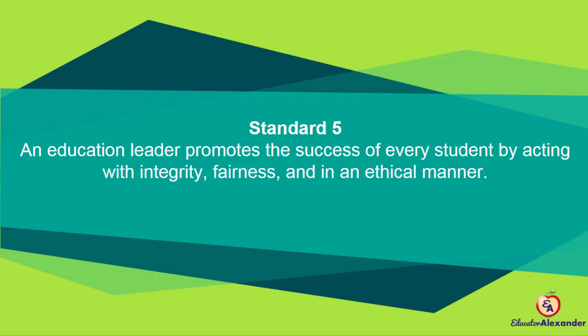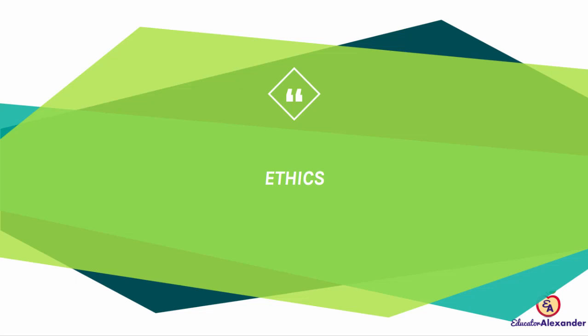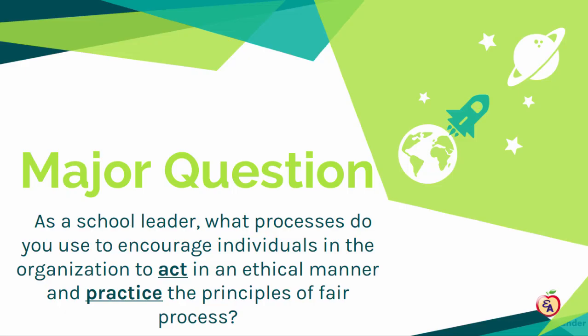Moving on to Standard 5. Standard 5 says an educational leader promotes the success of every student by acting with integrity, fairness, and in an ethical manner. Standard 5 is all about ethics, and to teach someone to be ethical, you have to model it. Major question: as a school leader, what processes do you use to encourage individuals in the organization to act in an ethical manner and practice the principles of fair process?